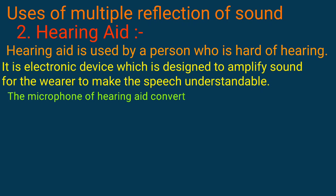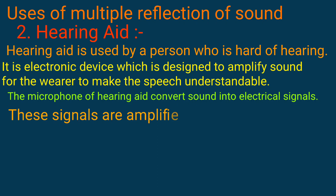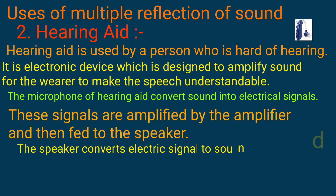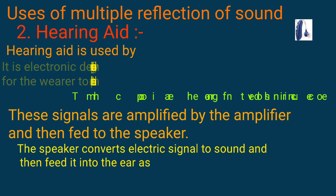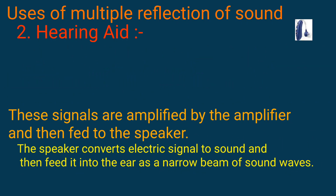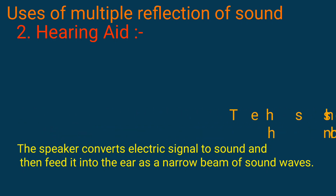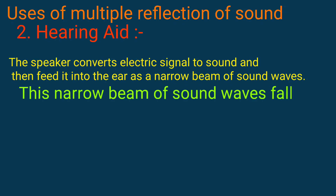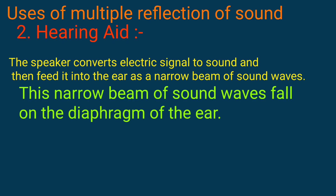The microphone of the hearing aid converts sound into electrical signals. These signals are amplified by the amplifier and then fed to the speaker. The speaker converts the electrical signal to sound and then feeds it into the ear as a narrow beam of sound wave.